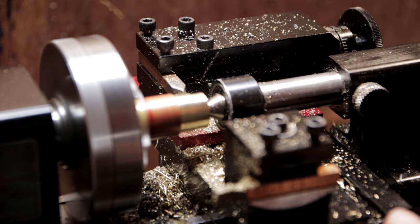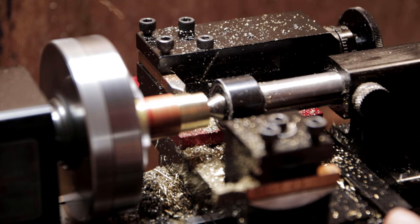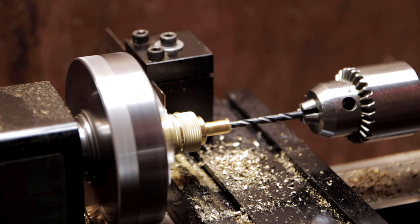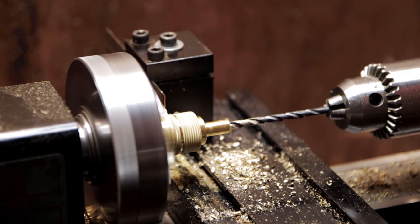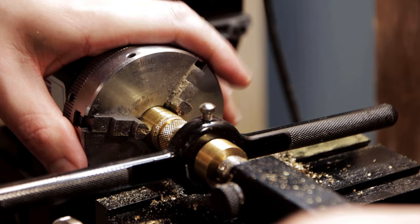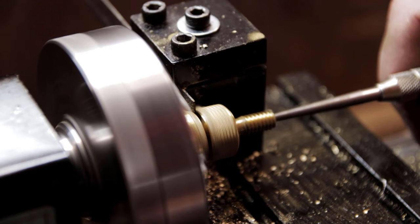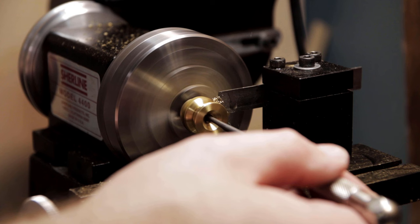So this here is going to be the tensioning thumbscrew for the lever cap and I actually based this one off of the ones that come on the Veritas hand planes. This was a tricky part for me to make because it needed both internal and external threads. And to quote Blondihacks, Yahtzee.